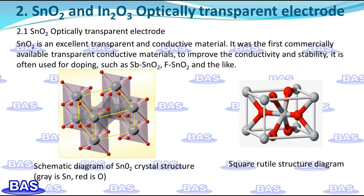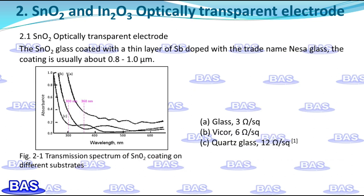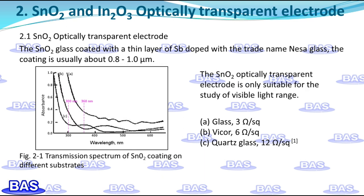Tin oxide and its doping have a tetragonal rutile structure. The typical spectrum of N-type tin oxide coating on an optically transparent substrate is shown in Figure 2-1. At 360 nm on a glass substrate, the sharp attenuation of light transmittance is due to absorption by the glass itself. A zinc oxide coating on a quartz plate can extend the optical window to a wavelength of 300 nm. Therefore, the tin oxide optically transparent electrode is only suitable for study in the visible light wavelength range.